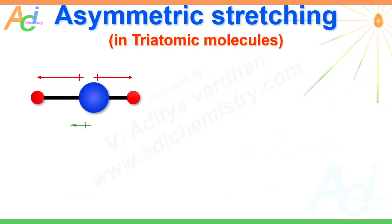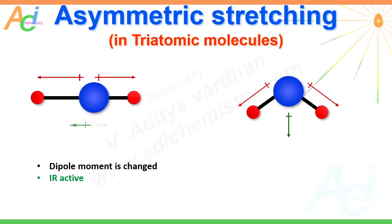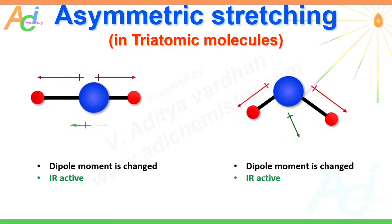Now the asymmetric stretching: here the stretching vibrations do not occur at the same time. As a result, there will be a change in the net dipole moment of the molecule during vibrations, hence this stretching mode is infrared active. The same is the case with non-linear molecules also — it is IR active because dipole moment is changed during asymmetric stretching.